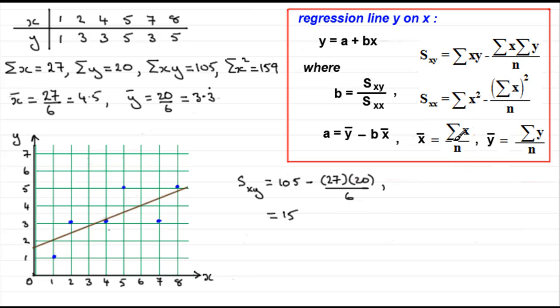Let's now work out s_xx. s_xx is going to be the sum of the x squareds, so we've got that that came to 159, minus the sum of x, all squared. Well, that's sum of x is 27, so we've got 27, and that's all squared, and that's divided by 6. Work that out, and what you find is you get 37.5.